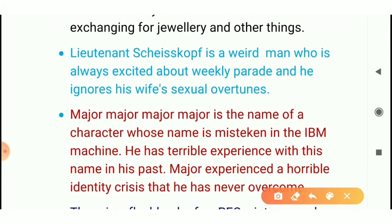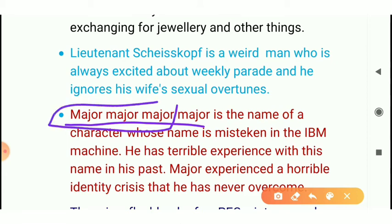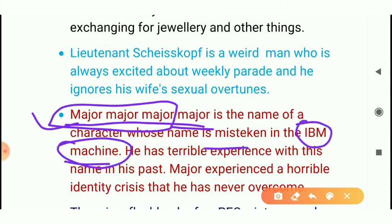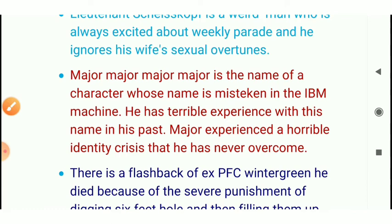One character is Major Major Major Major. His name is very strange — his father gave him the name Major Major, and then the IBM machine made a mistake and also assigned him the military rank of Major, making his full name Major Major Major Major. The letter is signed by the name Washington Irving.